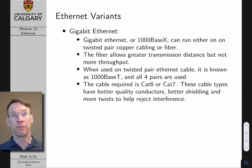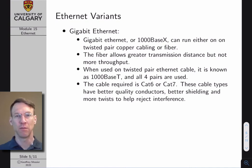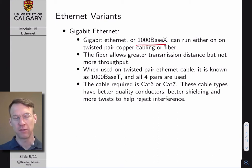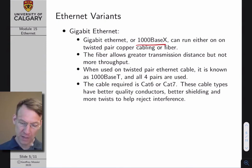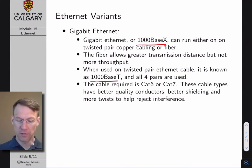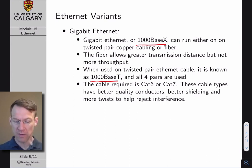Now we have Gigabit Ethernet, currently the standard. I've got Gigabit Ethernet everywhere in my house. Gigabit Ethernet, sometimes referred to as 1000BaseX, can run over twisted pair cabling or fiber. Fiber allows greater transmission distance, but not necessarily more throughput. When using twisted pair, it is known as 1000BaseT, and all four pairs are used as parallel channels. We use Cat 6 or Cat 7 cable — cables with more twists and better shielding.